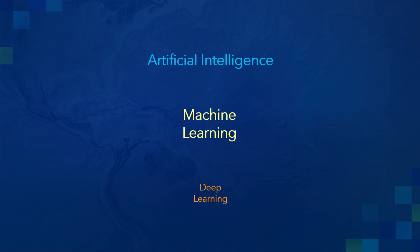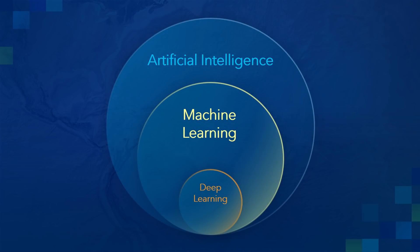At the broadest level, you have artificial intelligence, which describes how you can have a computer or a machine do a task that requires some level of human intelligence. One type of engine that can make this possible is machine learning, and that refers to data-driven algorithms, or techniques that learn from data to get you the information that you need.